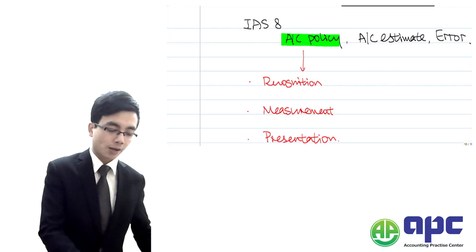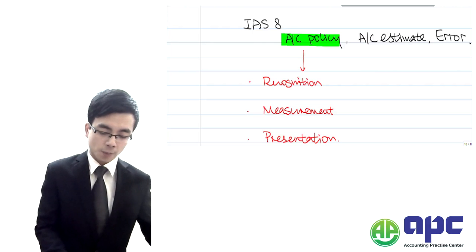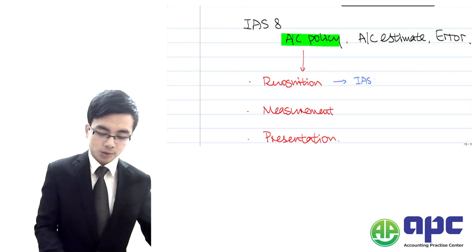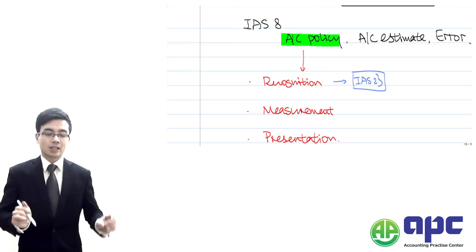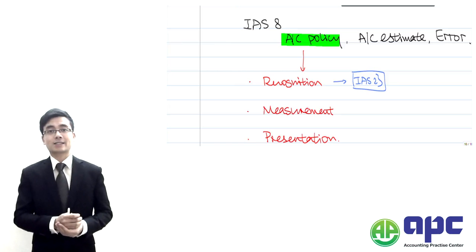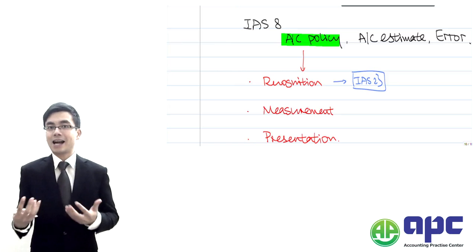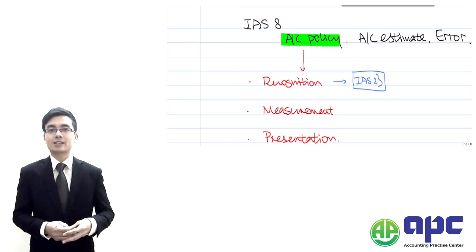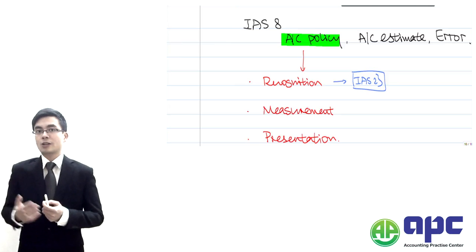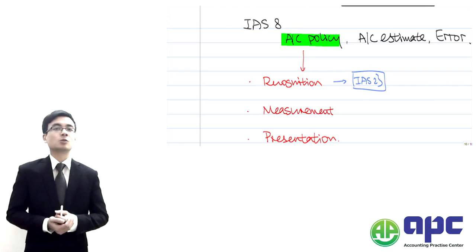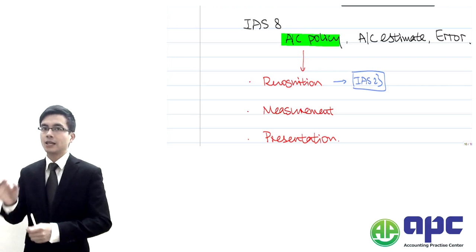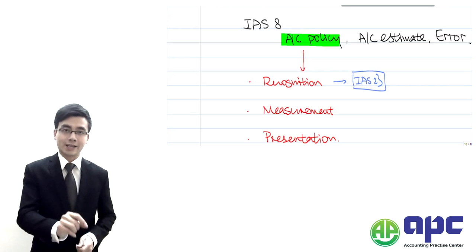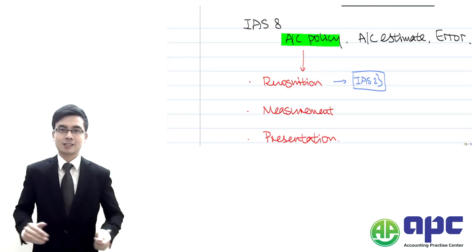First we're going to talk about recognition. For example, under IAS number 23, borrowing costs can either be recognized as an asset by capitalizing it as an addition to non-current assets. Alternatively, we can show that as interest expense in the P&L. Either recognize it as an asset or expense it—it's your choice, it's your accounting policy.